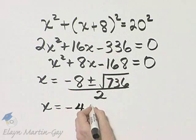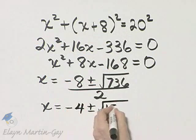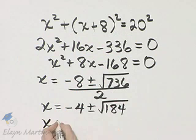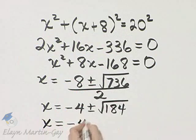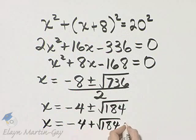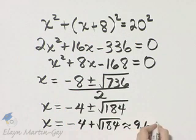When you do all of that, you'll have negative 4 plus or minus the square root of 184. Now, negative 4 minus 184 is a negative number. And remember, x represents the length of the leg. So we do not use that. And we will look at specifically negative 4 plus square root of 184. And that is approximately 9 and 6 tenths. And remember, we're in feet.